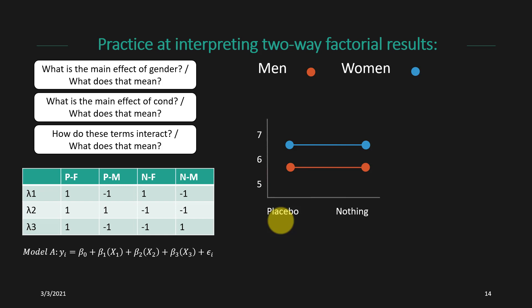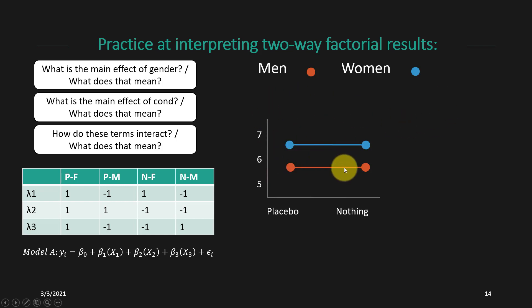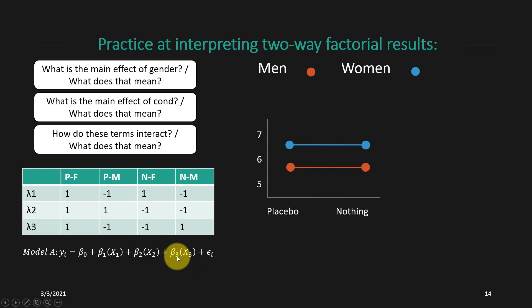Now let's practice with a few different scenarios using the same experimental design — a two by two factorial with a main effect of gender, main effect of condition, and a gender by condition interaction — but with different means plugged in. Based on these graphs, think about: what is the main effect of gender, what is the main effect of condition, and do these things interact? Go ahead and pause the video and commit to your answers before we discuss them.